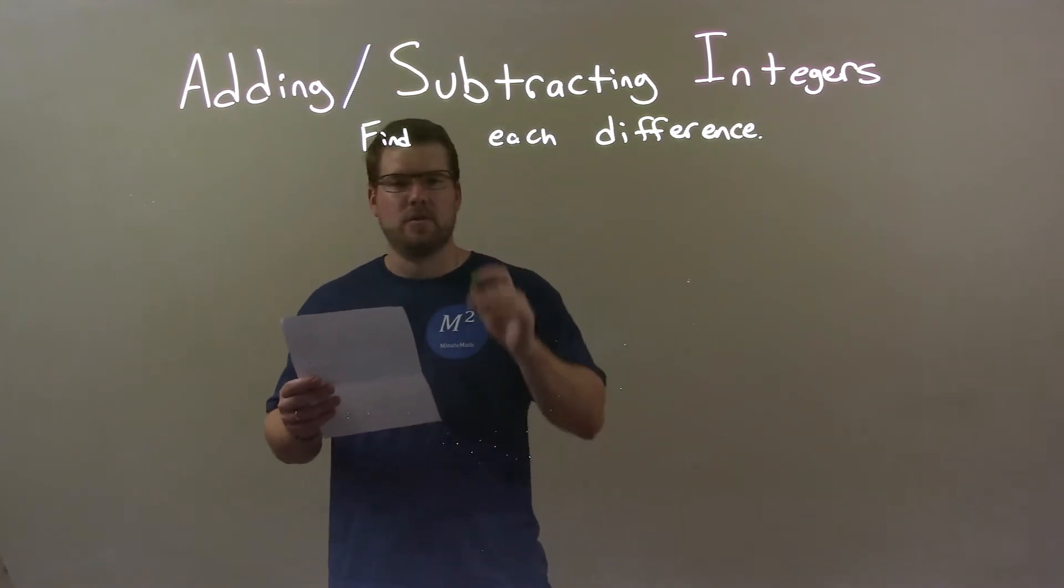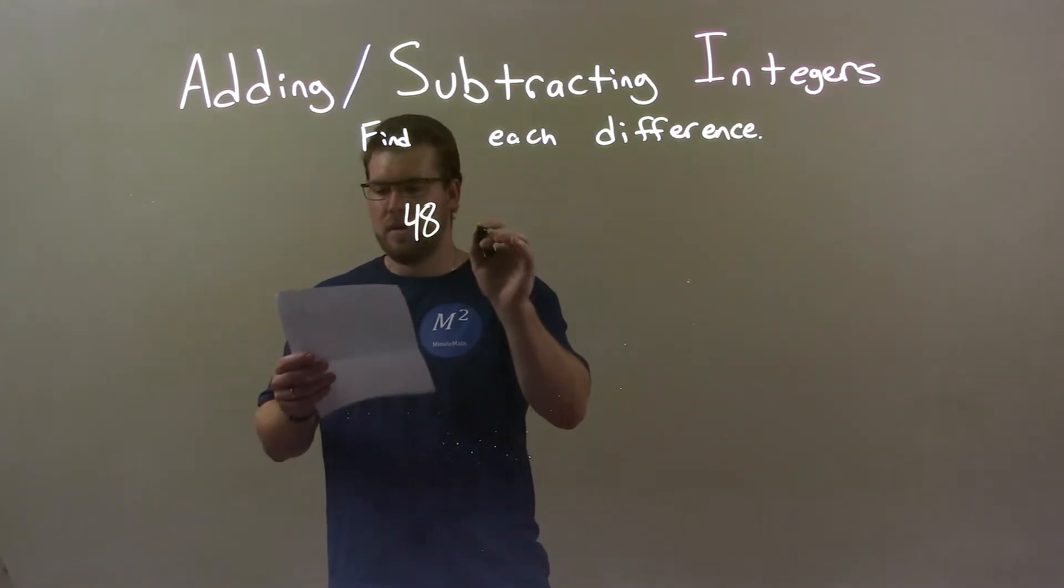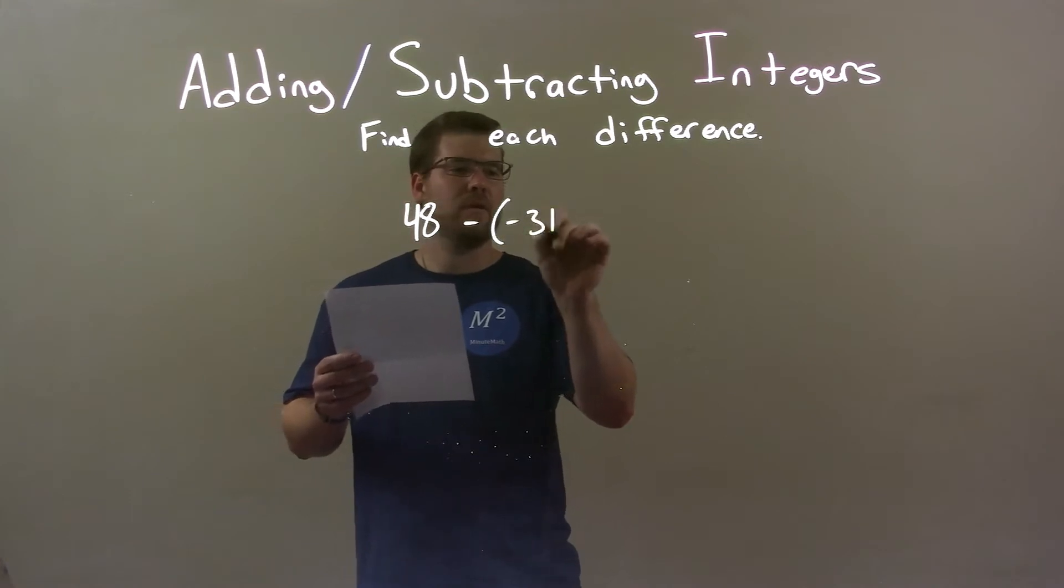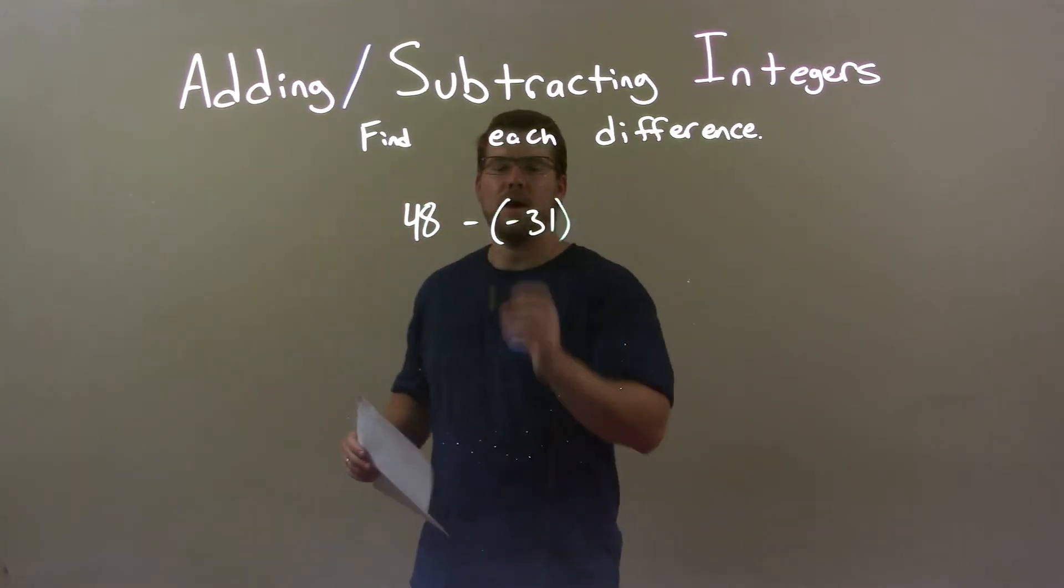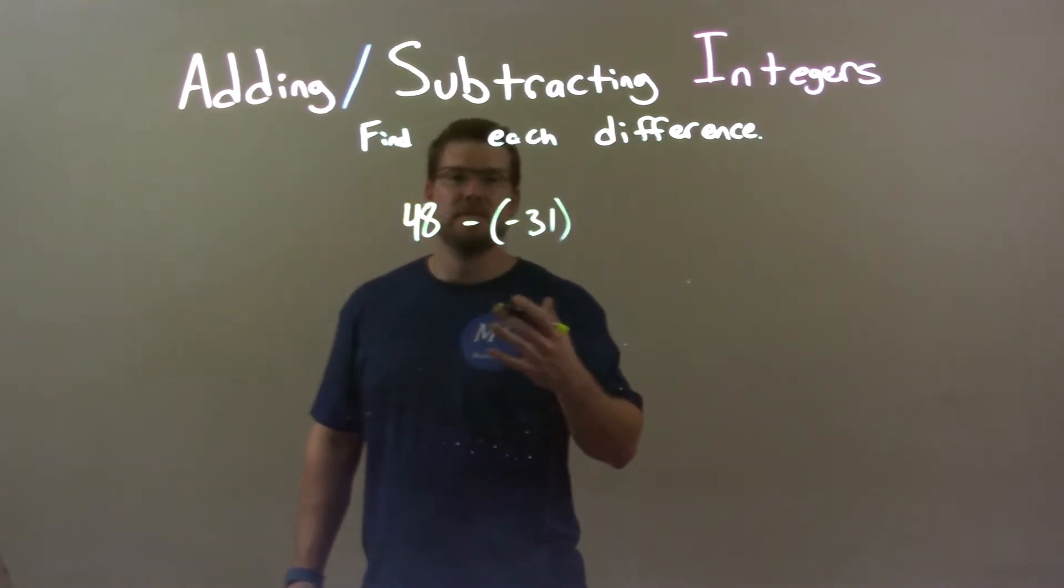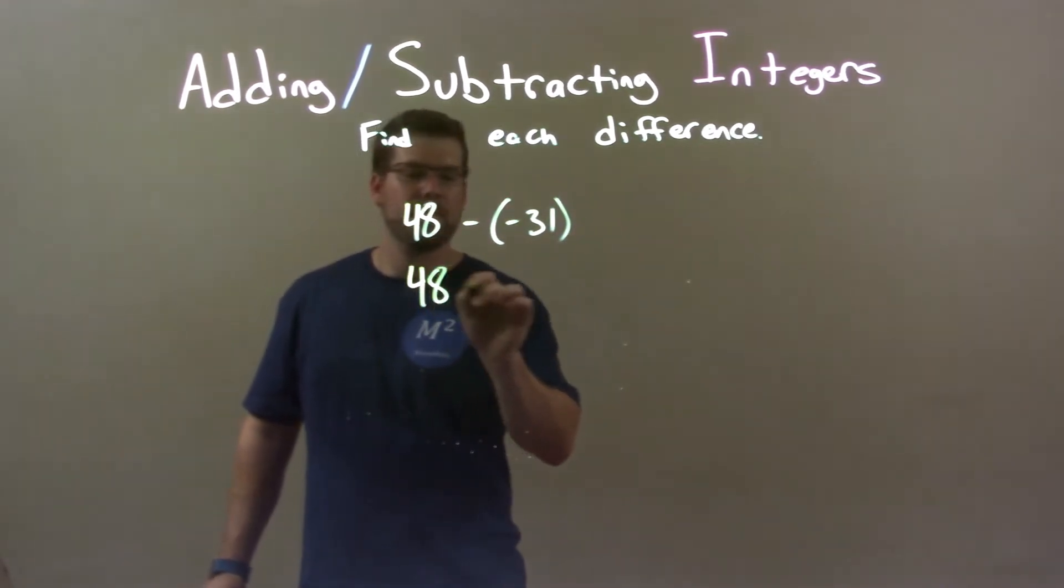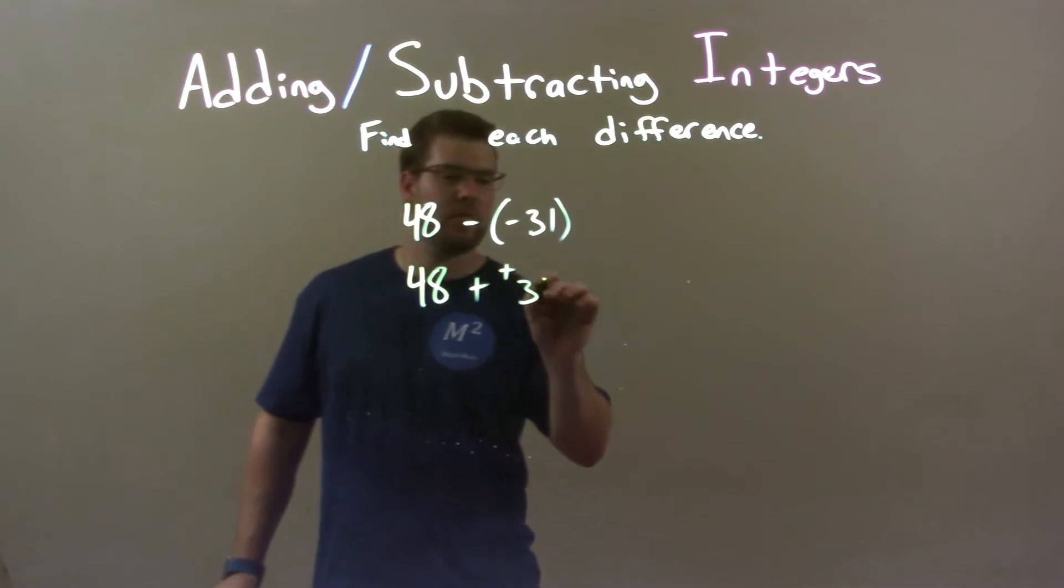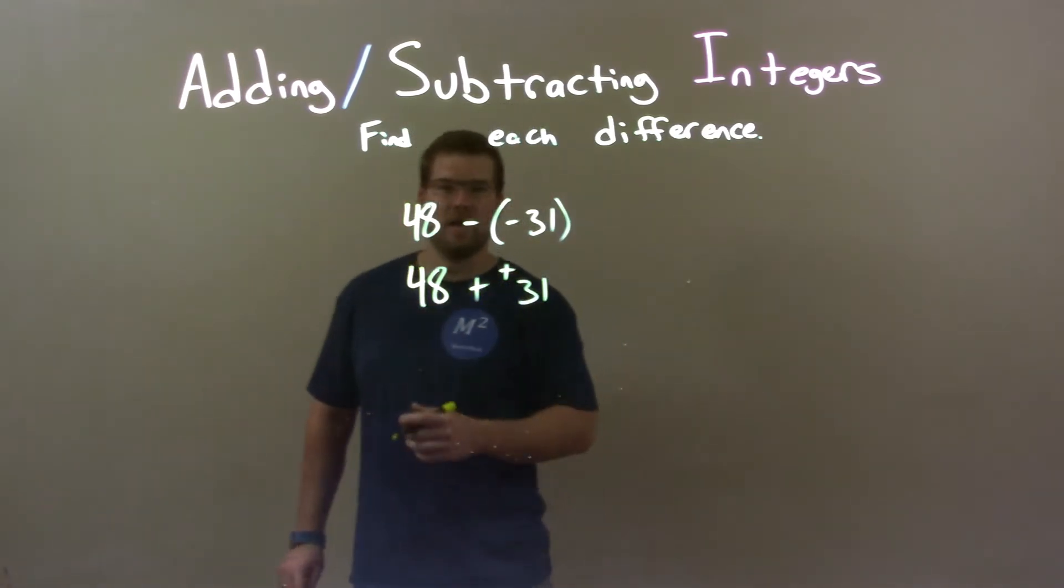If I was given these two integers, 48 minus a negative 31. So, 48 minus a negative 31. Well, we know subtracting a negative is the same thing as adding a positive. So, 48 plus a positive 31. Now we're just adding these two.